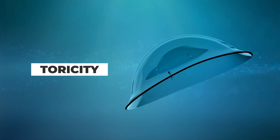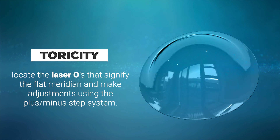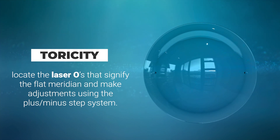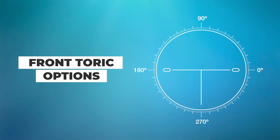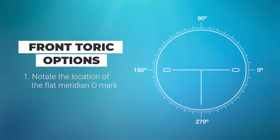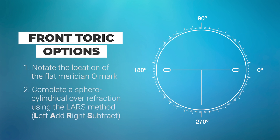Toricity is incorporated in the scleral landing zone of the Custom Stable Elite. Once the lens is on, locate the flat meridian laser-O mark. While the lens is on, note that the rotation is calculated relative to the zero/180 meridian on the eye.